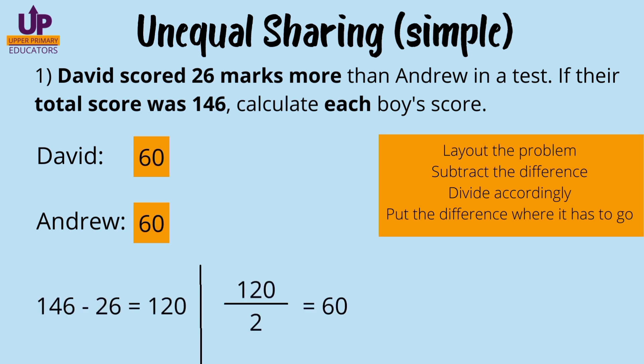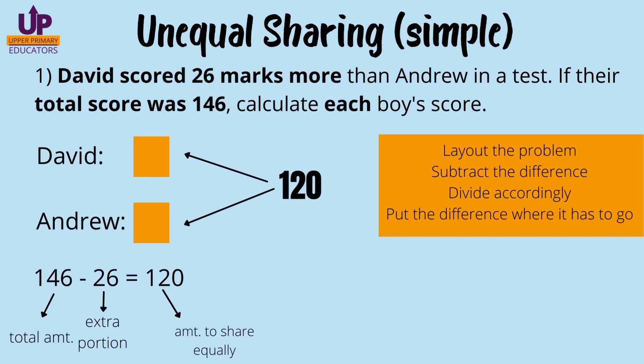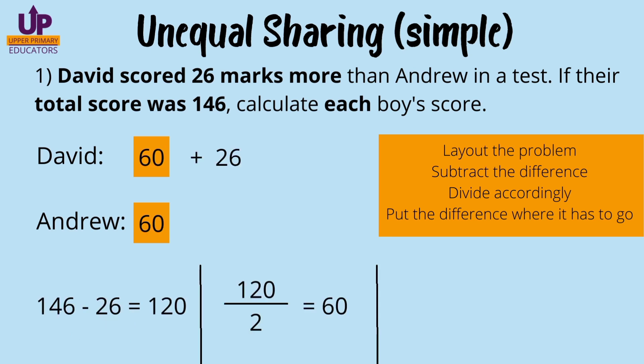When we divide accordingly, we divide by two because the 120 marks has to be shared between two persons — David and Andrew. So 120 divided by two leaves us with 60. Now, David has 26 marks more than Andrew, so David will have 60 marks plus an additional 26 marks, giving him 86 marks. Andrew remains with 60 marks. So David has 86 marks while Andrew has 60 marks.